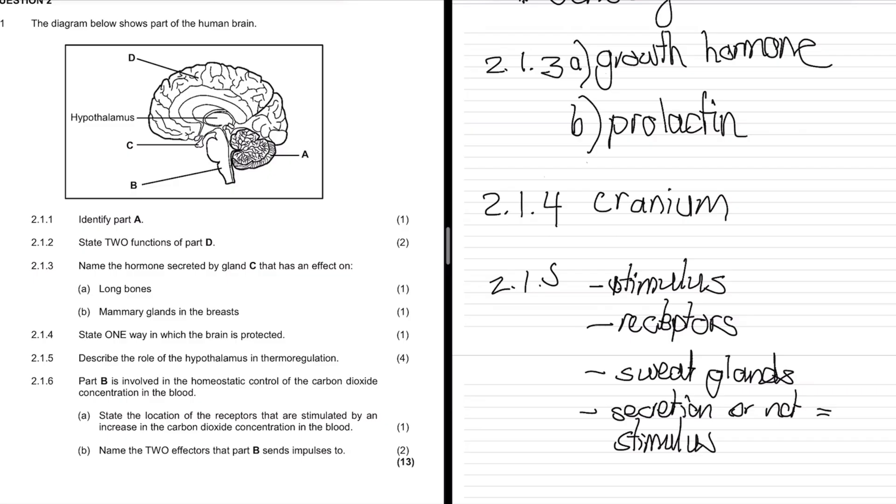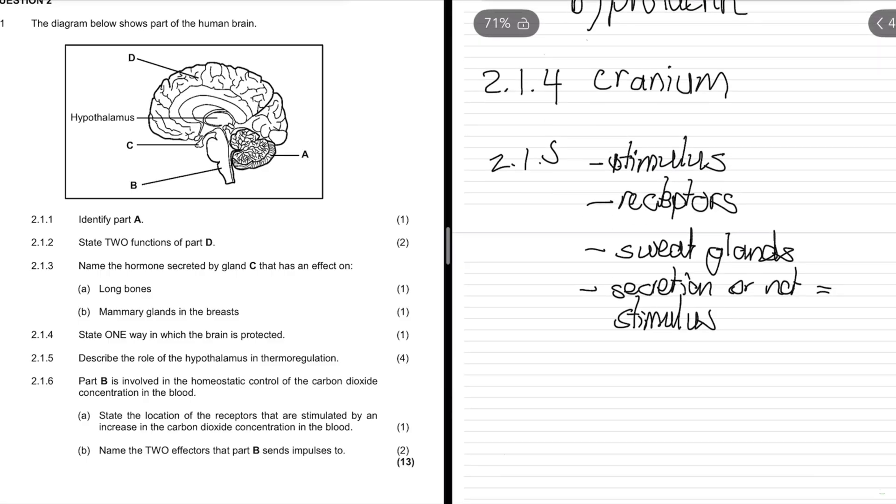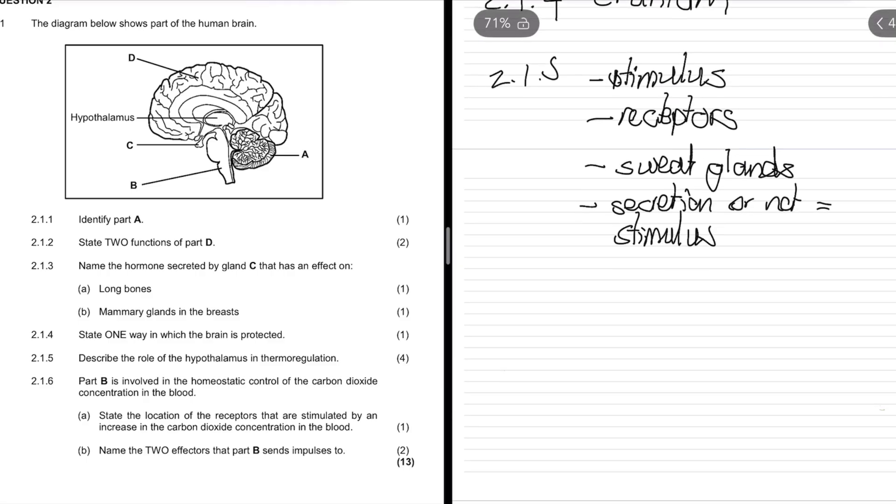As long as you understand basic thermal regulation or any homeostasis will always have a stimulus, a certain receptor that will cause something. A stimulus will trigger an imbalance that will cause receptors to open that will counteract whatever initial imbalance we had.